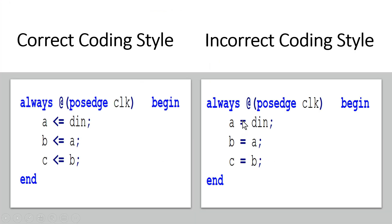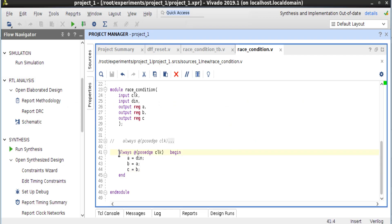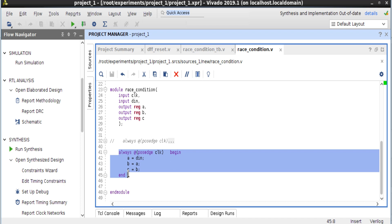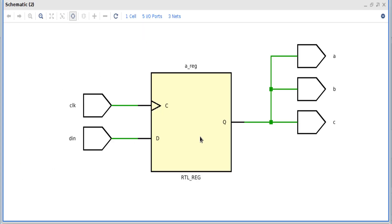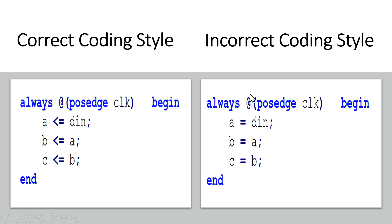Now let us turn our attention to the code where we are using blocking assignment statements and see what the synthesis results will be. I have changed the code. Let us see the output of the logical synthesizer — press schematic. Friends, it is only inferring a single flip-flop. You see, din is the input of this flip-flop and a, b, and c are all outputs of the same single flip-flop. Why did it generate only a single flip-flop? Let me try to explain.